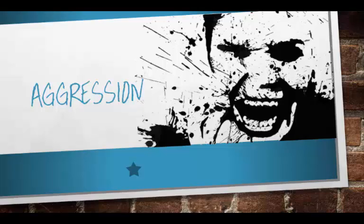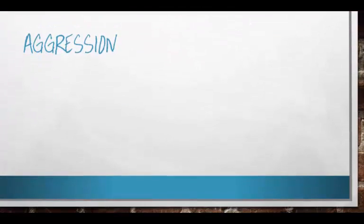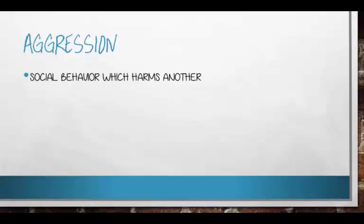In this chapter 11 video we're going to talk about aggression and we're going to link it into our topic on conformity. The definition of aggression is probably what you think it is — it's harming someone else, and in this context it's a social behavior, so you need two people: one to act as aggressor, one to be the target.